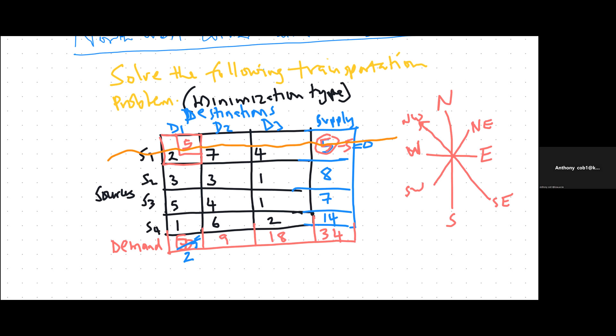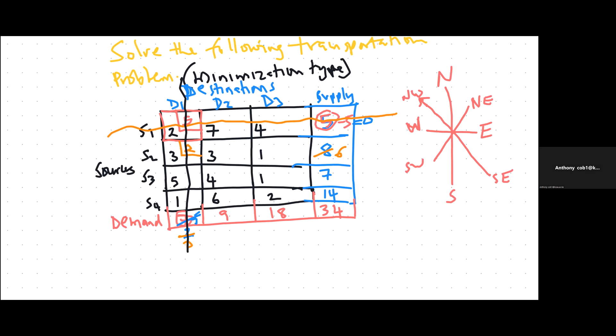Now we have a reduced matrix. In the reduced matrix, you again work with the northwest corner cell. The current northwest corner cell is this one. In that cell, you check the row total, which is eight, and the column total, which is two. We allocate the minimum between eight and two, so we allocate two. You take away two from the column to get zero, and take away two from the row to get six. Then you delete the row or column which has been satisfied. We delete column one, because we needed seven, transported five here and two here — that gives us seven.